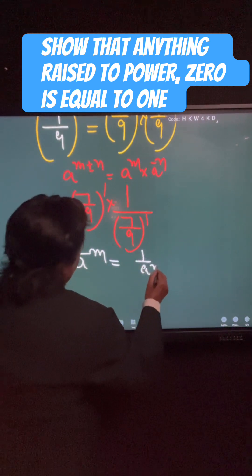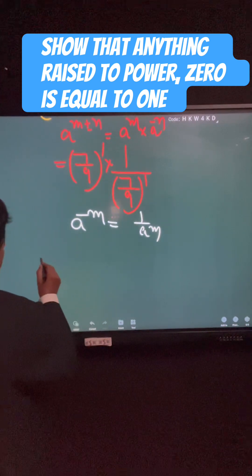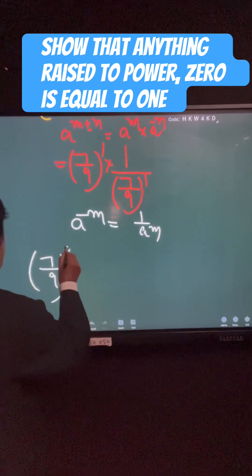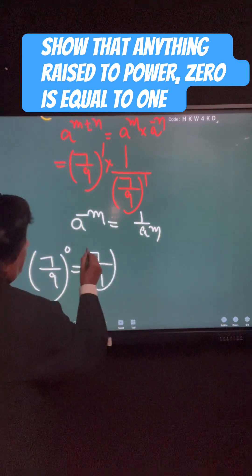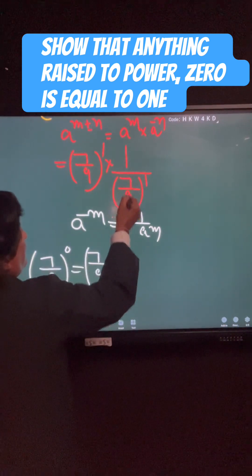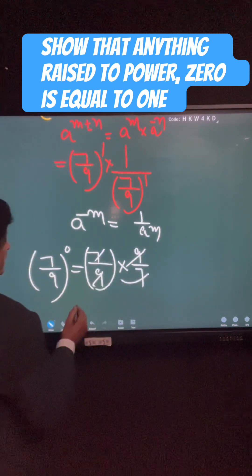Now, dear students, 7 upon 9 to the power 0, 7 upon 9 and 9 upon 7, this gets cancelled.